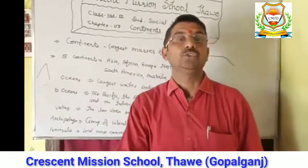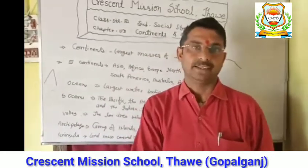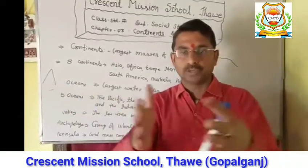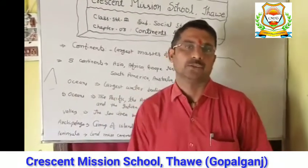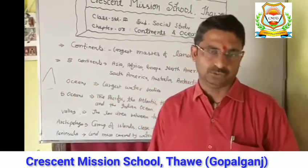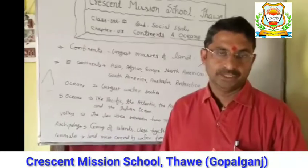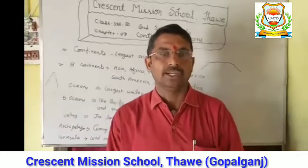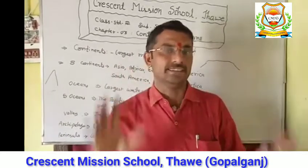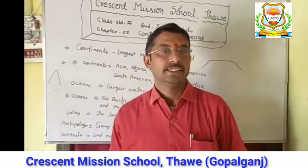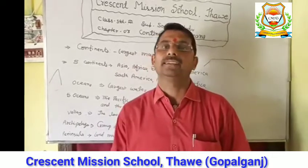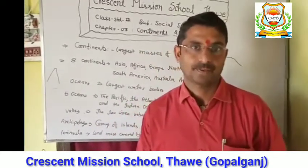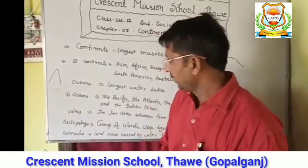Mountains also have lowlands between them. The low areas between mountains are called valleys. This completes the basic land structure overview.